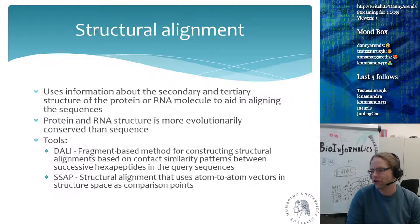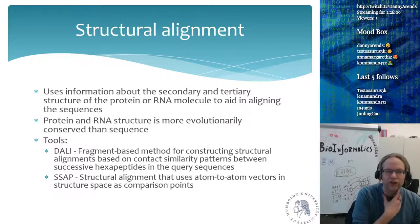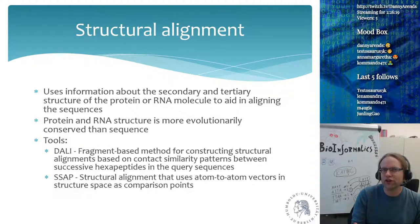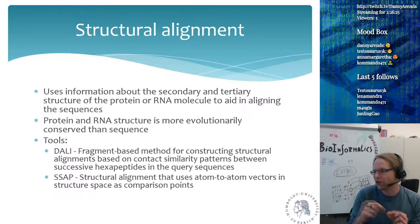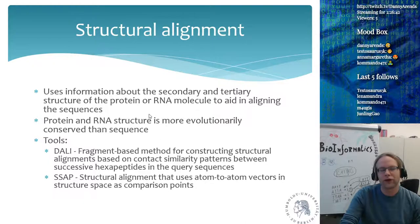These hexapeptides of six amino acids in a row are assigned a structural similarity score. If two things have very similar structural scores, that alignment will be preferred. SSAP uses atom-to-atom vectors in structure space as comparison points — when the structure of a protein is known, the distances between individual atoms are used when querying a new sequence for alignment. These are relatively new tools that perform slightly better than standard pairwise alignment using a BLOSUM matrix.